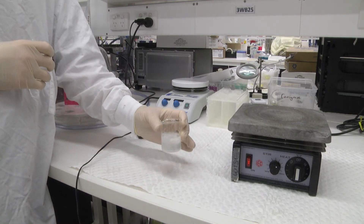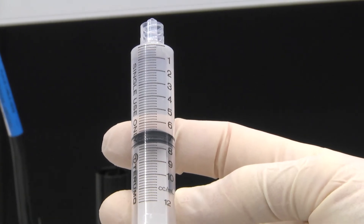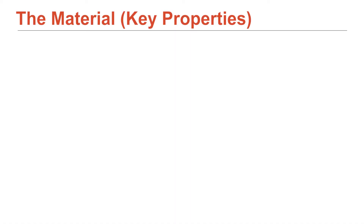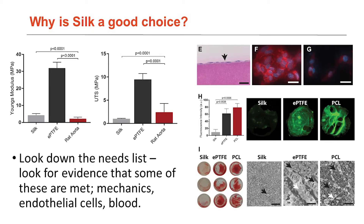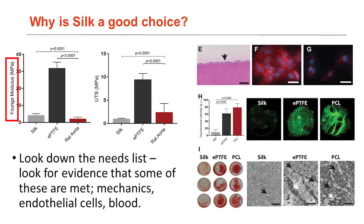There's a follow-on step where we dissolve the fibroin into a solution so we can use it for materials manufacture. Around properties, you want evidence that the material you've chosen addresses some of the things on your checklist. For silk, it's been well characterized over a number of years that the mechanics are actually very tunable — that's one of its great strengths. In the data in the slides, we went to some effort to match the mechanical properties of silk with a rat aorta and compare it to commercial ePTFE, showing Young's modulus (elasticity) and tensile strength. You can see we've tried really hard to match silk to the rat aorta, and by definition it is very mismatched to ePTFE.